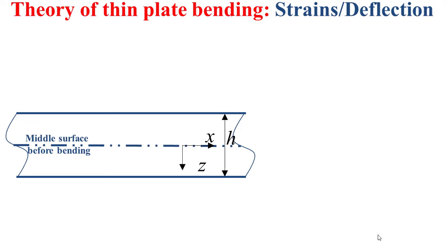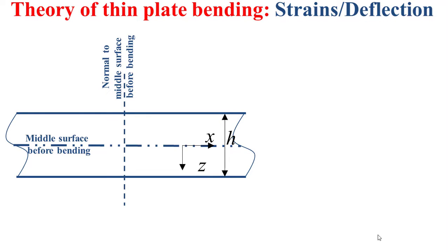The model you see now in this slide represents the thickness side of a thin plate before bending. This thin plate before bending is defined by its thickness h, its middle surface before bending, and also its normal to the middle surface before bending. Note that the thickness h is amplified here for reasons of visual clarity.